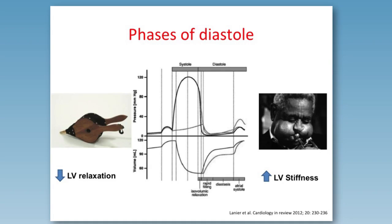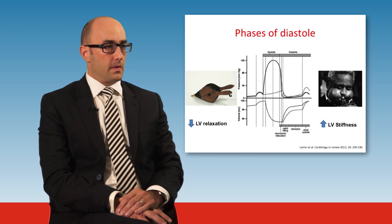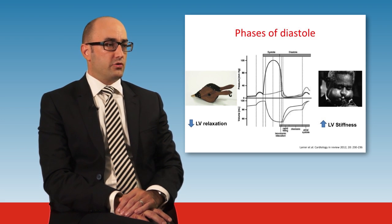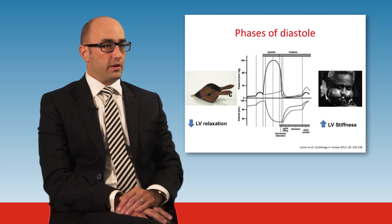The reduction in initial left ventricular relaxation can be compared to a set of bellows — when using bellows you squeeze them to push the air out but you also actively pull them apart to suck air in, and this is the abnormality in early diastolic dysfunction. In late diastolic dysfunction, when the ventricle is stiff, the atria have increased difficulty pushing blood into the ventricles. This can be compared to the swollen cheeks of Dizzy Gillespie when blowing through a trumpet.